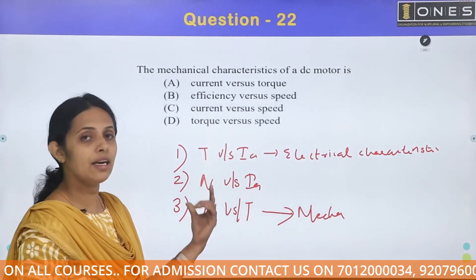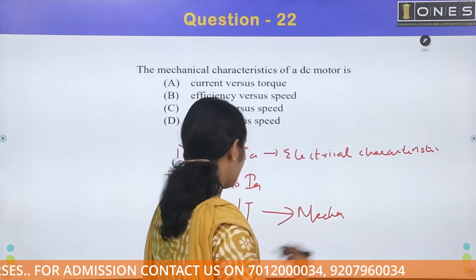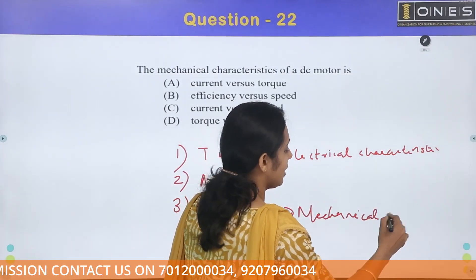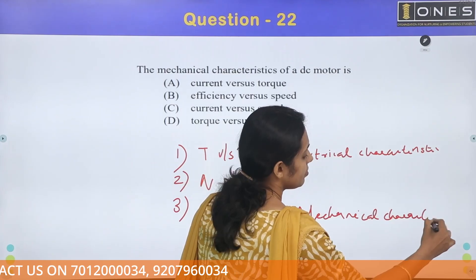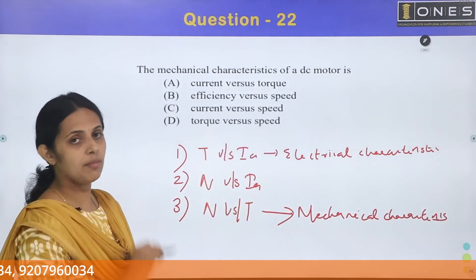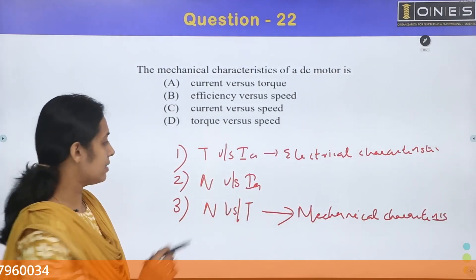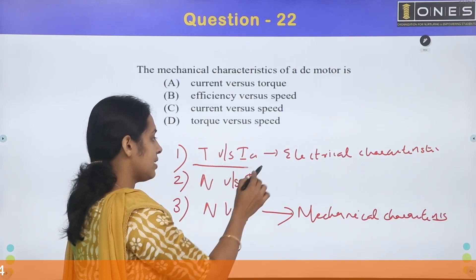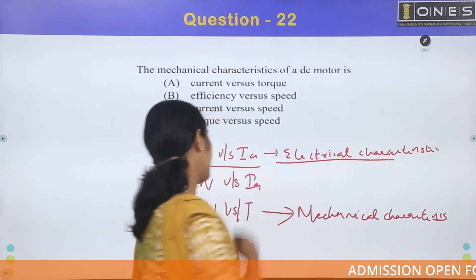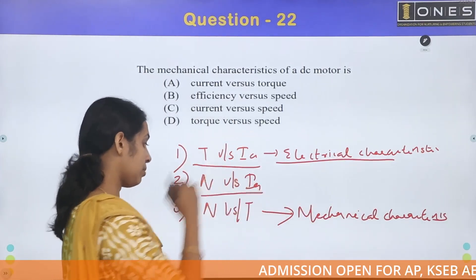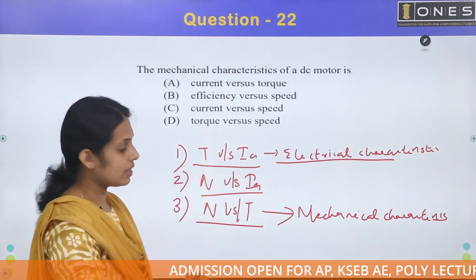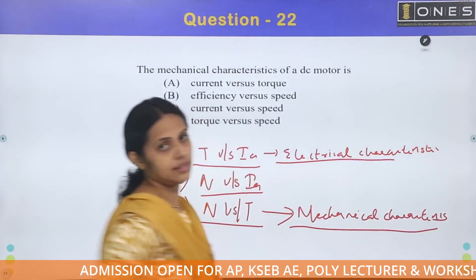There are two terms of mechanical characteristics. Torque vs. armature current means electrical characteristics. Then speed vs. armature current. Then speed vs. torque — that means mechanical characteristics.